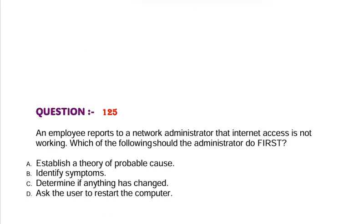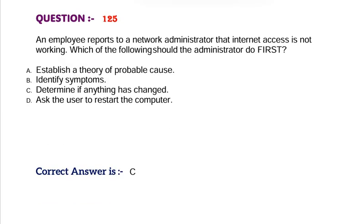Question: An employee reports to a network administrator that internet access is not working. Which of the following should the administrator do first? Option A, Establish a theory of probable cause. Option B, Identify symptoms. Option C, Determine if anything has changed. Option D, Ask the user to restart the computer. Correct answer is Option C.